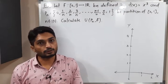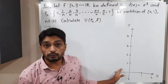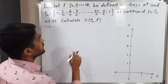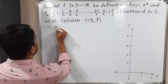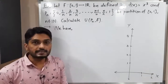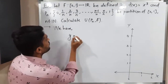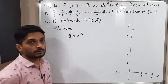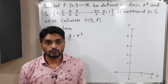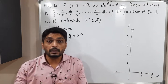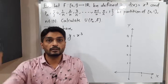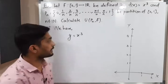Let us start with the given function. First, we will try to draw the graph. To draw the graph, we replace f(x) by y, so we have y = x³. It's not a straight line and it's not a parabola either. So we will find multiple points on the graph and join them by freehand drawing to get the required graph.